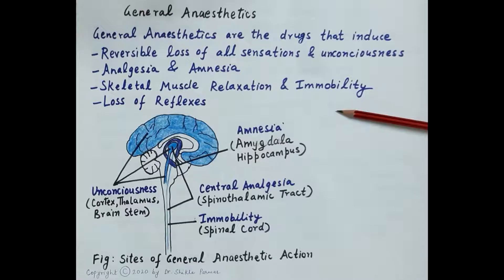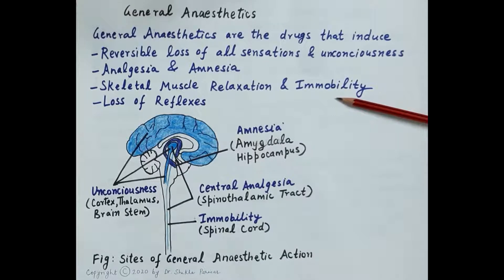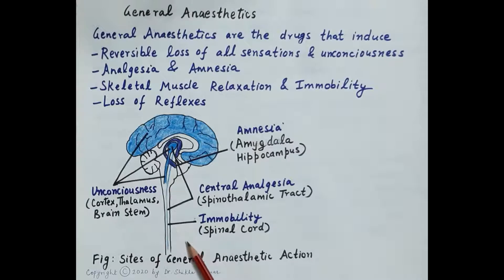No single drug possesses all these characteristic features, and therefore the general anaesthetic plan typically involves use of a combination of drugs — primarily a combination of fast-acting intravenous drugs and inhalational drugs, that is inhalational general anaesthetics and intravenous general anaesthetics.